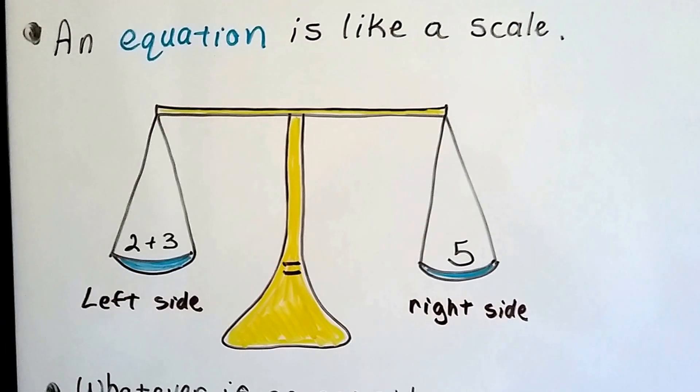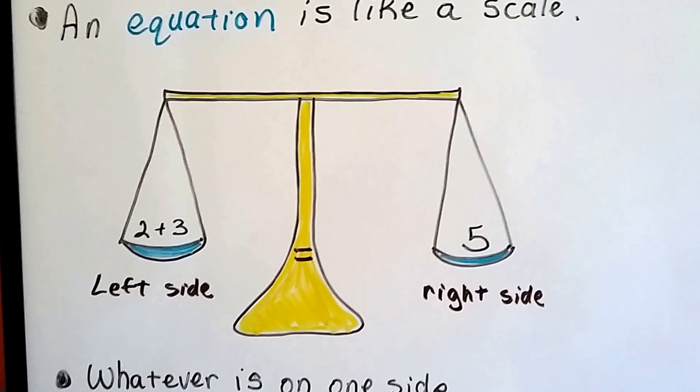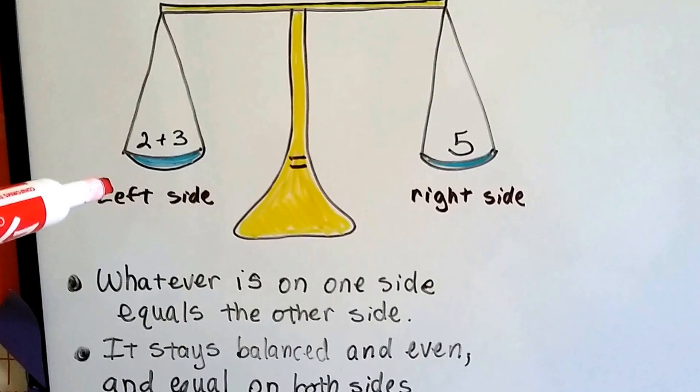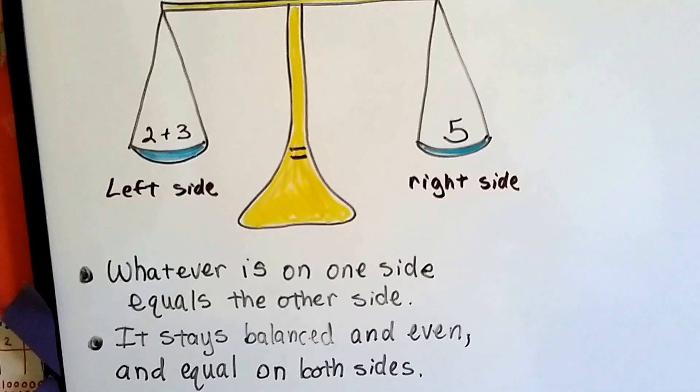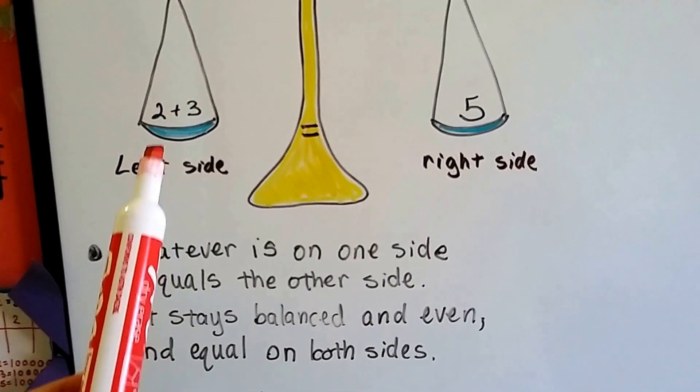An equation is like a scale, it's got a left side and a right side with the equal sign in the middle. And it's got a balance. Whatever is on one side equals the other side. It stays balanced and even and equal on both sides.